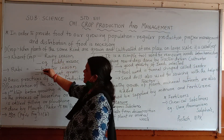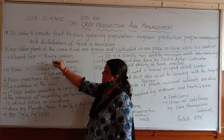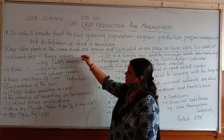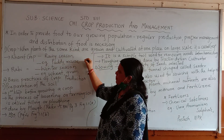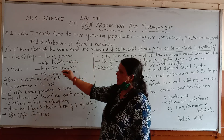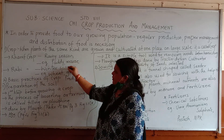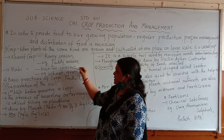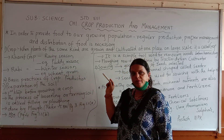Kharif and Rabi. Kharif crops grow in the rainy season, for example paddy and maize. Rabi crops grow in the winter season, for example wheat and grain. Is it clear everyone?